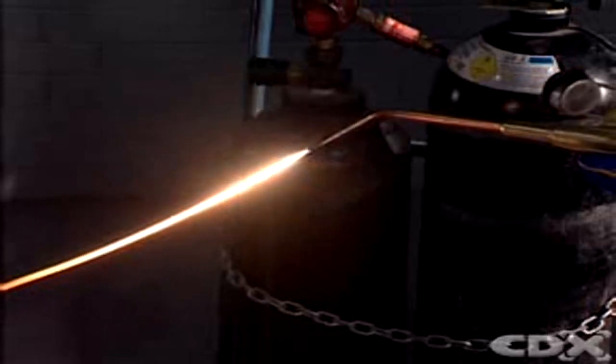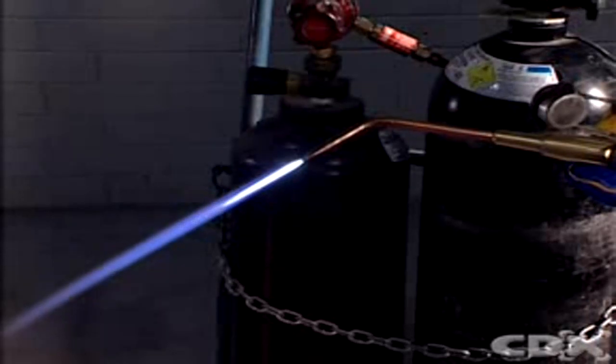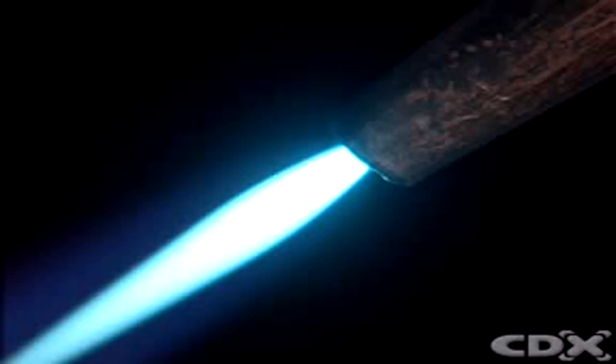The pure acetylene flame is yellow and it will change to blue as you add the oxygen. Continue to open the oxygen valve until you can observe a small sharp blue cone in the center of the torch flame. This is the neutral flame you need for general heating.